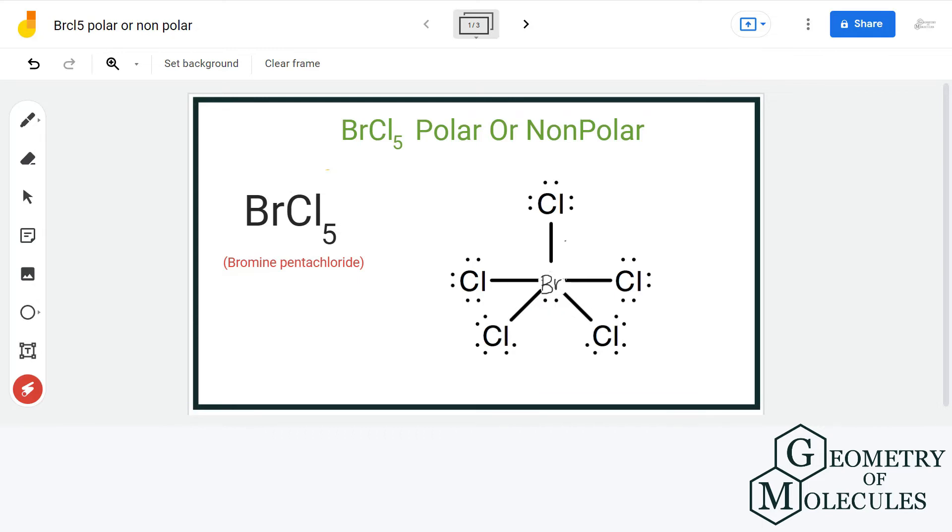If we look at this molecule in 3D, we can see that the shape is square pyramidal, and that is because of the presence of a lone pair on bromine.